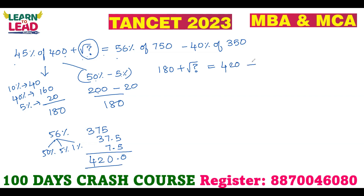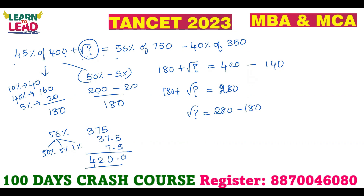Minus 40% of 350: 10% is 35, 20% is 70, so 40% is 140. Now, square root of question mark is equal to 180 plus 420 minus 140. 420 minus 100 is 320, and 320 minus 40 gives 280. So square root of question mark equals 280 minus 180.